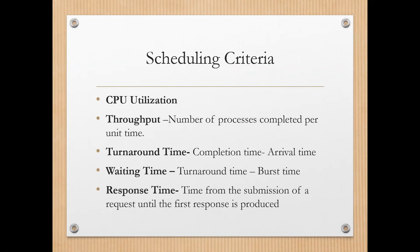Before moving to scheduling algorithms, we need to know about scheduling criteria. There are different aspects to consider when selecting a scheduling algorithm. The first criteria is CPU utilization. The main objective of any CPU scheduling algorithm is to keep the CPU as busy as possible. Theoretically, CPU utilization ranges from 0 to 100%, but in real-time systems it varies from 40 to 90% depending on the load.